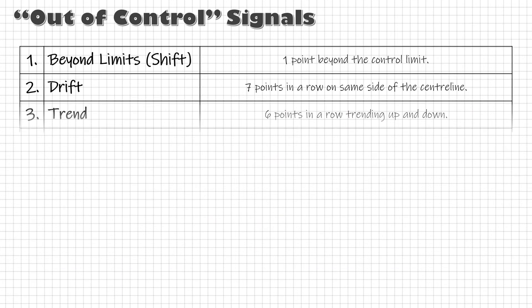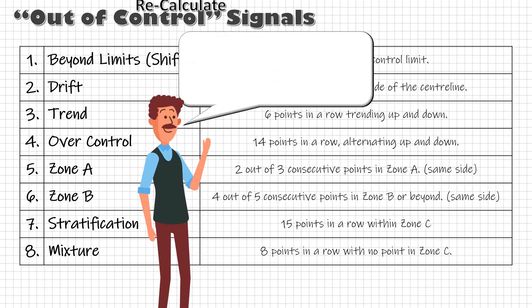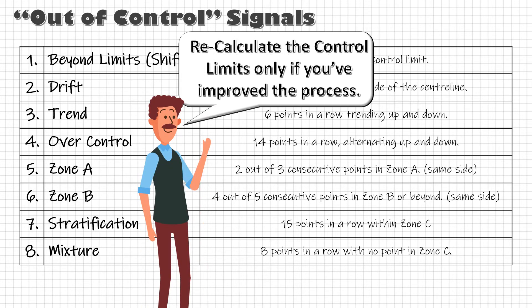But these out of control signals do not require the recalculation of control limits. Meaning, if any of these signals is observed just find and eliminate the cause and continue plotting the data with same control limits. Control limits are to be recalculated only when you have made any fundamental improvement in the process thereby changing the process capability.